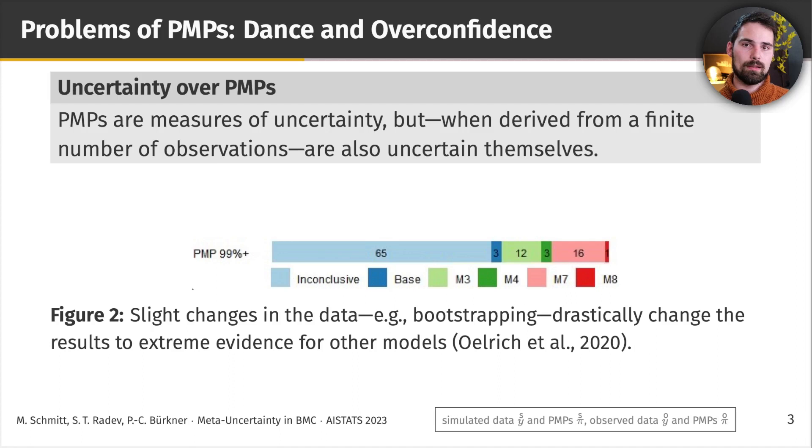So we see two issues here. One is overconfidence. That is, the posterior model probabilities concentrate on one of the candidate models. Even though this concentration is not robust, which is the second problem, the dance of Bayes factors, or dance of posterior model probabilities, that is, by only slightly changing the data, we see drastically different evidence. So they pretty much jump or dance around.